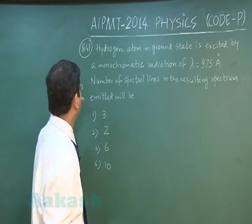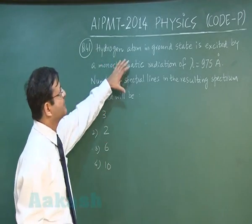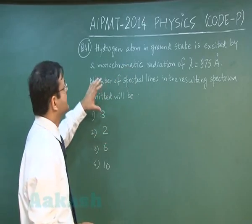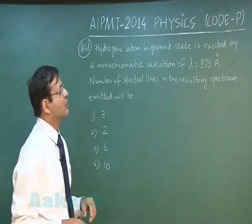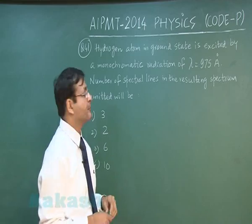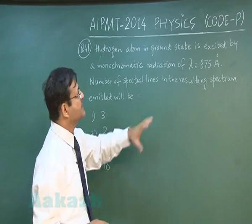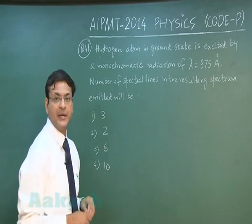Now, in the next question that is question 41, it says hydrogen atom in ground state is excited by a monochromatic radiation of lambda 975 angstrom. Number of spectral lines in the resulting spectrum emitted will be.